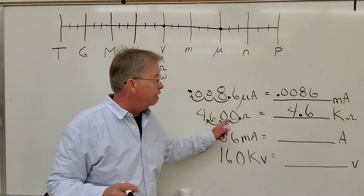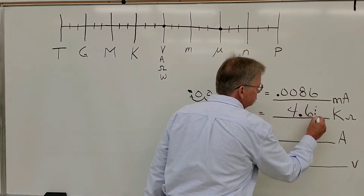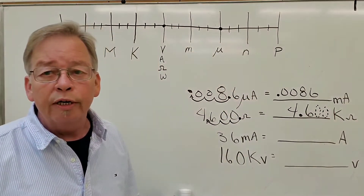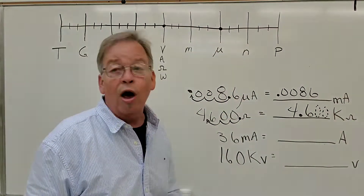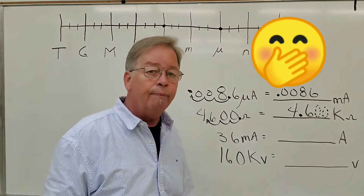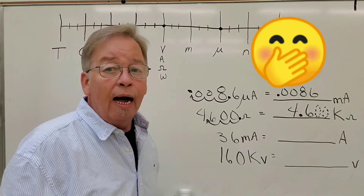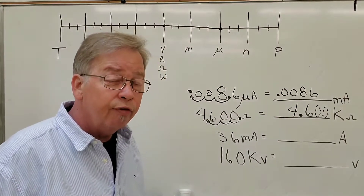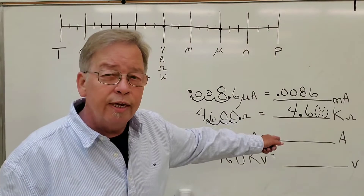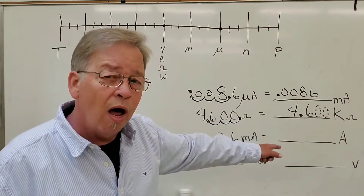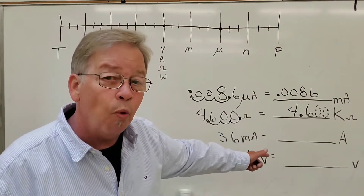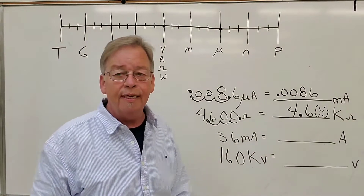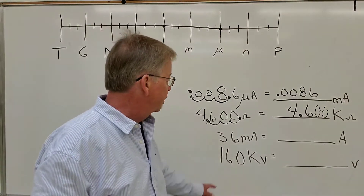Now, how about those zeros? Yes, I can put those zeros, but they really don't count for anything, so I don't see the point. If I don't have to put those zeros, I'm not going to — but don't let that confuse you. 4.600 is the same quantity as simply 4.6. So 4.6 kilo-ohms and 4.600 kilo-ohms are the same value. Don't worry about it.